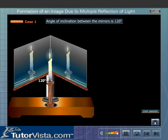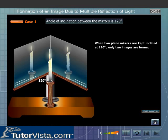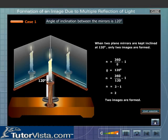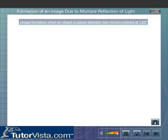When the angle of inclination between the mirrors is 120 degrees, you can see that when two plane mirrors are kept inclined at 120 degrees, only two images are formed. Go through the mathematical proof given here and click on the button to see the ray diagram.